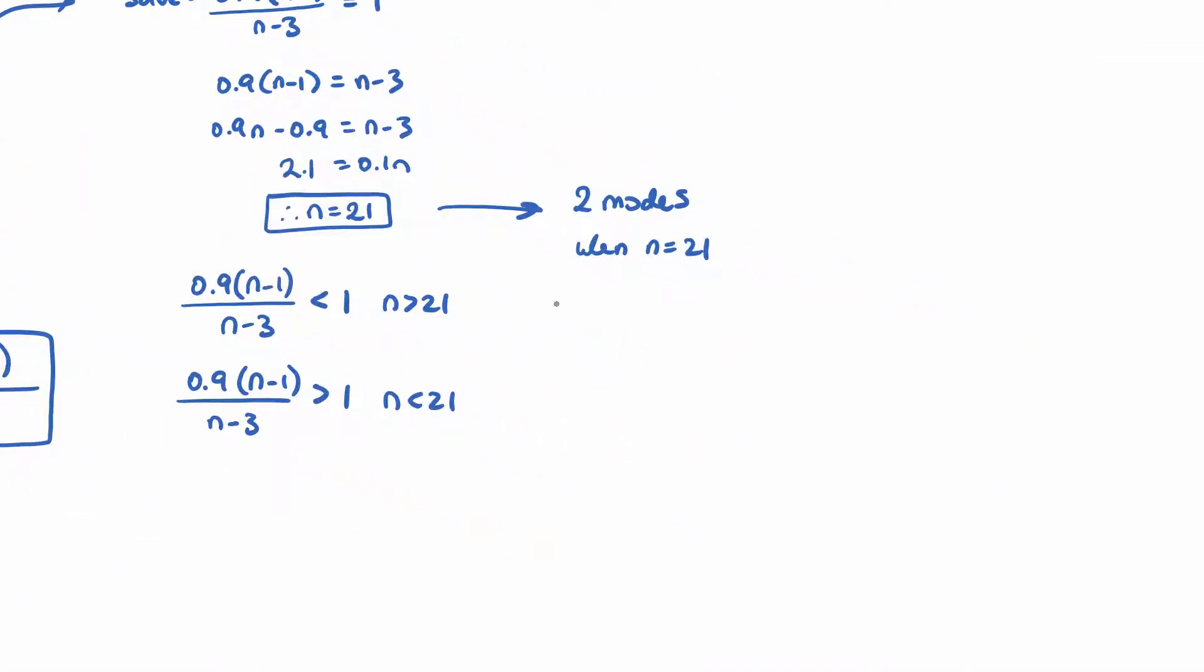So the two modes are M1, which is 20, and M2, which is 21. So that's the answer to part, actually that answers both part D, 1, and 2, because in part 2, it says state the values of M1 and M2. Okay, that's the answer to part D.